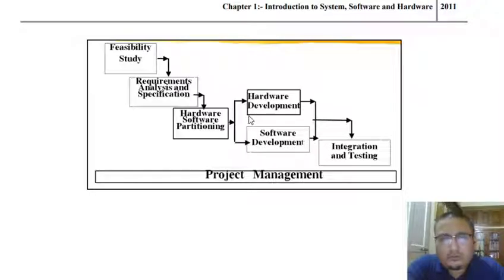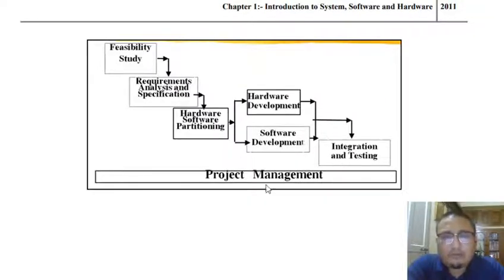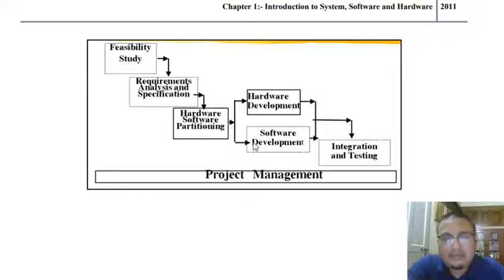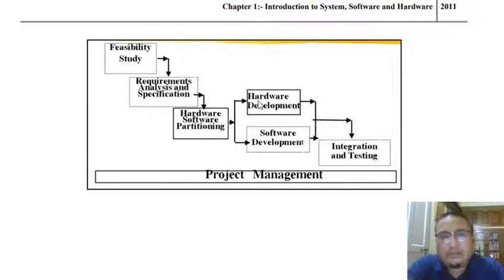After partitioning, we move on with the hardware manufacturing part and the software development part, and then integration and testing. So the phases in computer system engineering are: feasibility study, requirement analysis and specification, hardware and software partitioning, hardware manufacturing, software development, and integration and testing. Within the software development phase, we have planning, design, detailed design, coding, and different forms of testing. Similarly, hardware has hardware design, hardware manufacturing, and hardware testing.